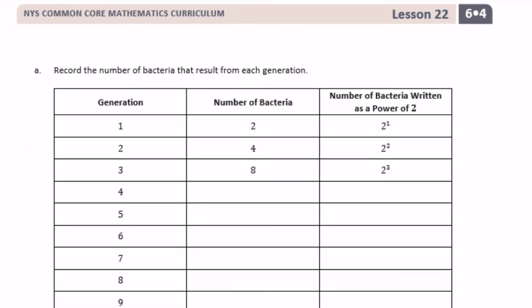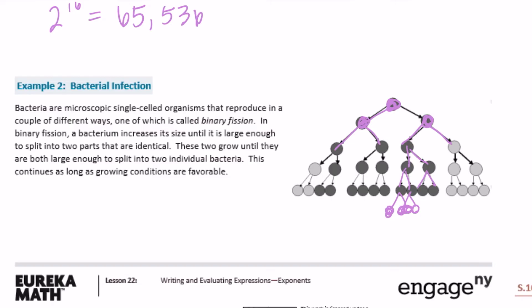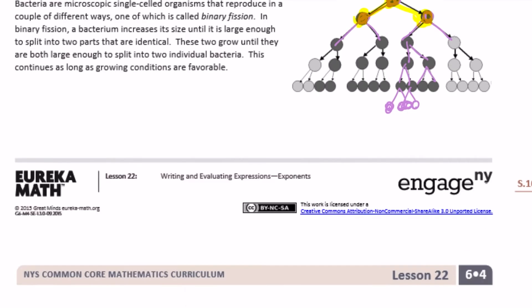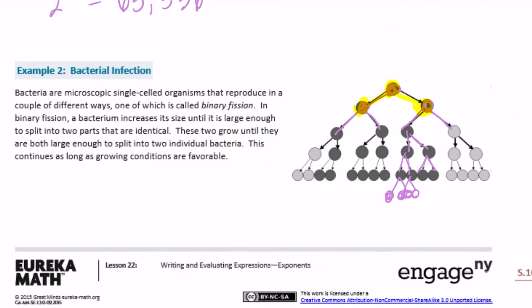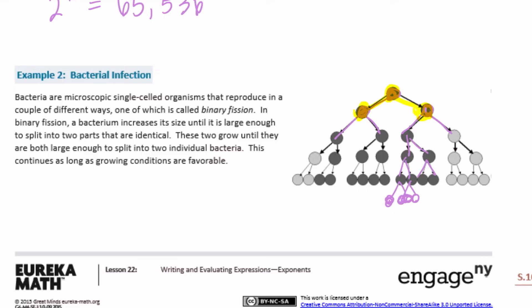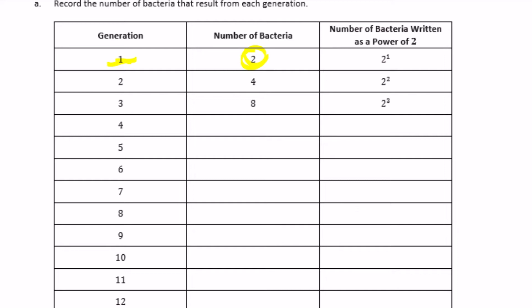Record the number of bacteria that result from each generation. The first generation: we start with one, and when it splits it becomes two — so first generation is 2 bacteria, which is 2 to the first power. Second generation: those two each split, giving us four bacteria, which is 2 to the second power.